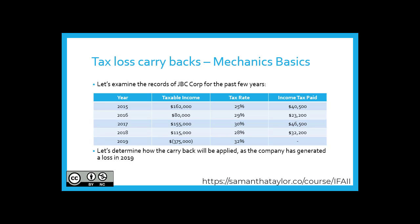When looking at the mechanics, perhaps it's best to look at an example. JVC Corp is back, and here are its taxable incomes and tax rates for the past few years. When looking at 2019 at the bottom, let's take a look at how this tax loss could be carried back and how it would be applied for the company to utilize this, should they choose to carry it back up to three years.